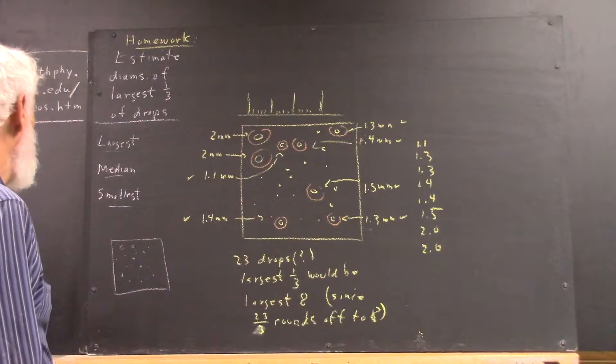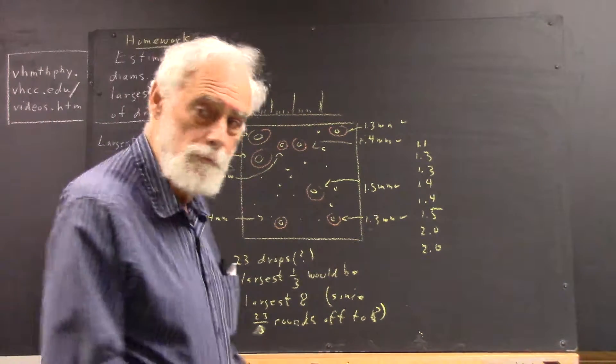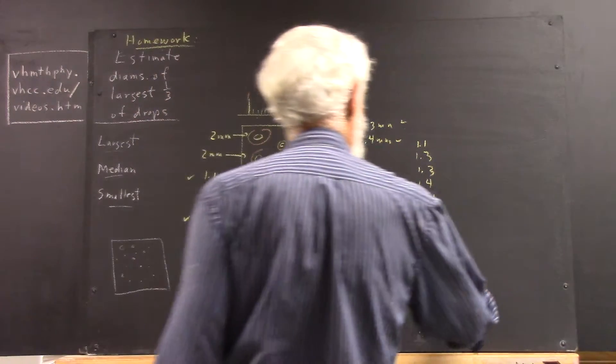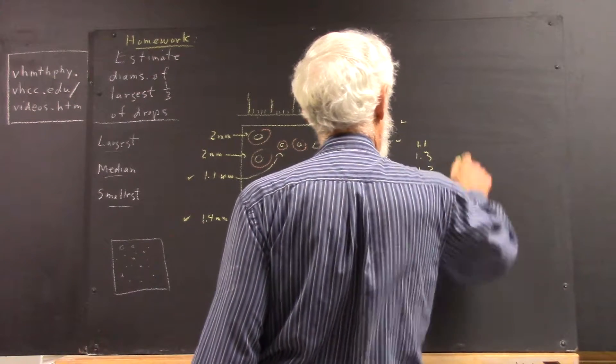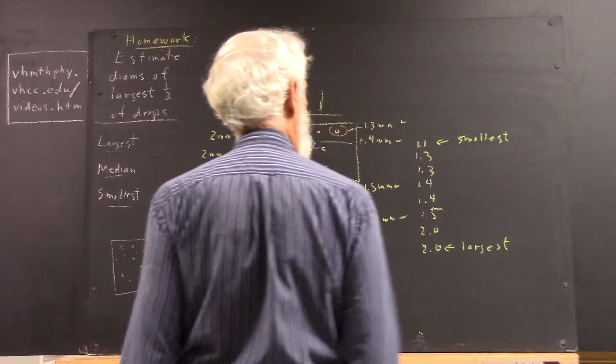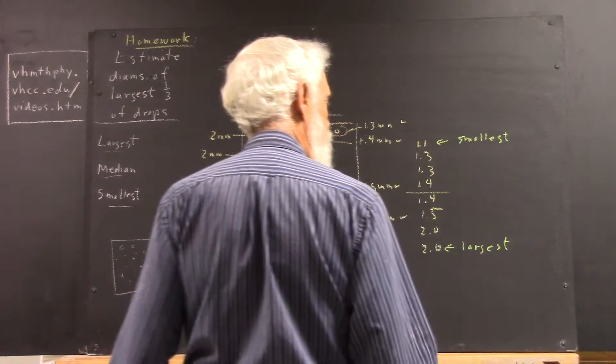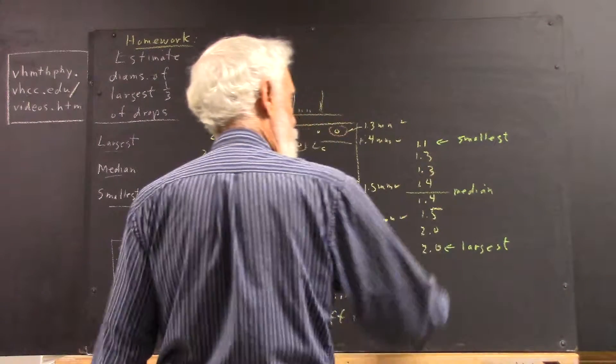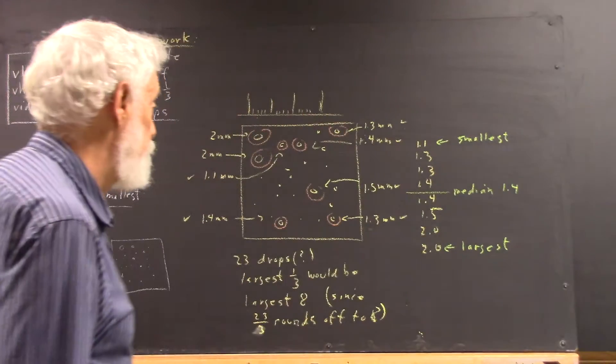So now I want to know, okay, what's the largest and smallest? Well, the largest and the median, there are eight of them, so the median is between the two 1.4s, so the median is 1.4, okay?